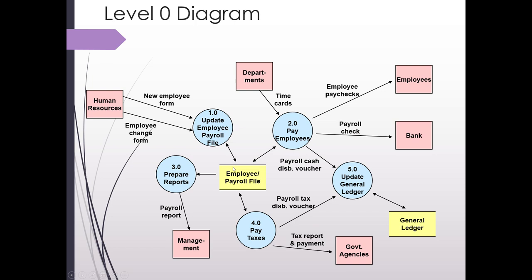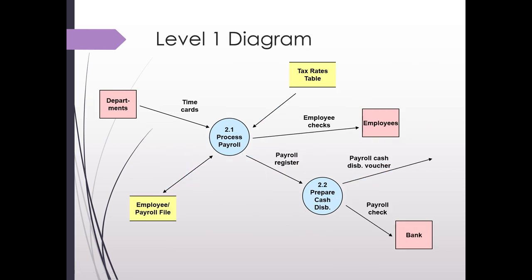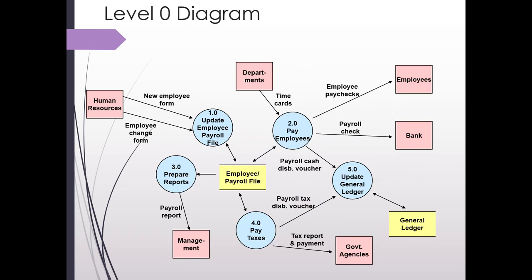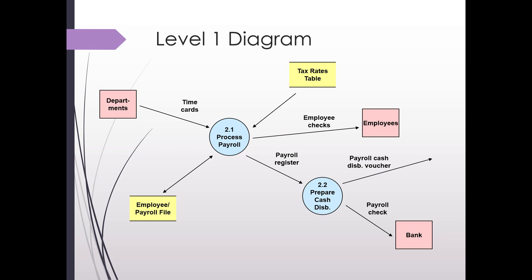We now have two data stores: the employee payroll file and the general ledger. A note about the numbering: we call this a level zero because all the numbering is 1.0, 2.0, etc. Moving to a level one, a level one diagram takes just one of these processes or circles and breaks it down further. In this case we took process 2.0 — 'Pay Employees' — and we are breaking that down into more steps.